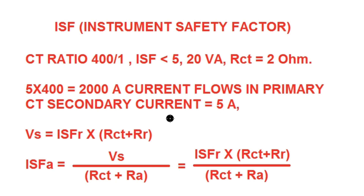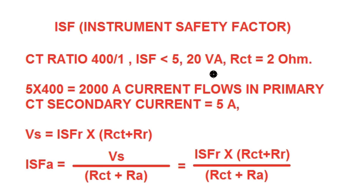Since ISF is provided, we can calculate the saturation voltage. Saturation voltage Vs = ISF_R × (RCT + RR), where ISF_R is the rated ISF from the nameplate — here ISF_R = 5 — RCT is the CT secondary resistance, and RR is the rated burden in terms of ohms. Here the rated burden is 20 VA. Since CT secondary rated current is 1 A, we calculate RR: I²R = 20 VA, so RR = 20 / 1² = 20 Ω.